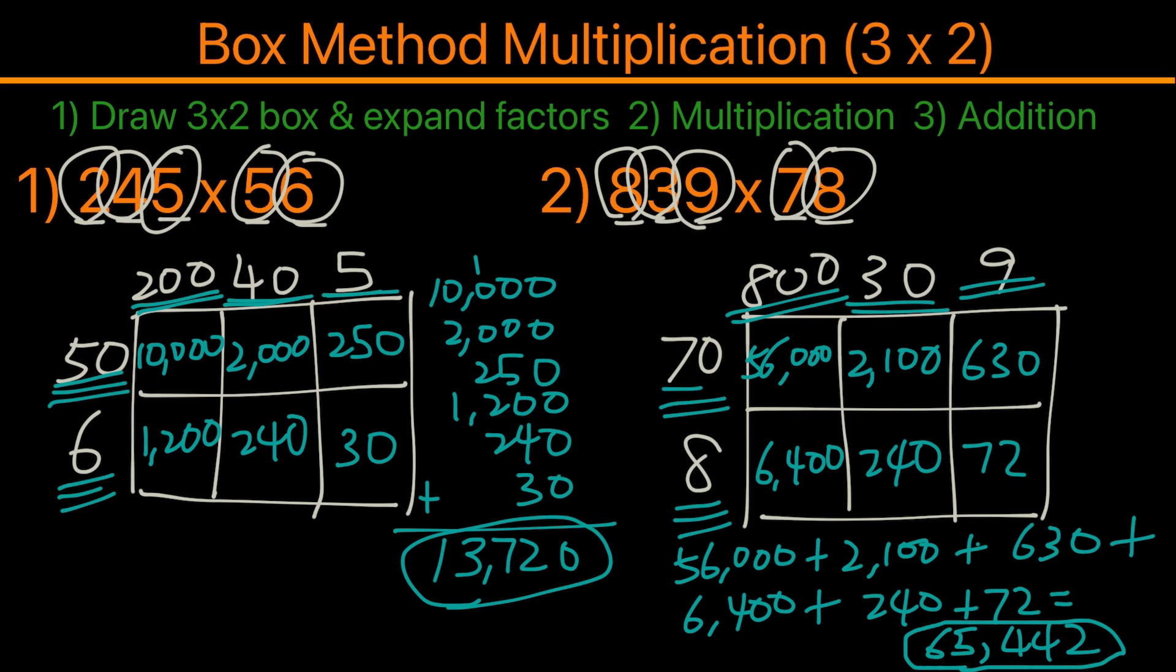So these are two examples of how you would use box method multiplication 3 by 2. You would draw the 3 by 2 box, expand the factors, then you will multiply them together and add up all the numbers that you see in the boxes. Hopefully this video is helpful to you, and thank you for watching.